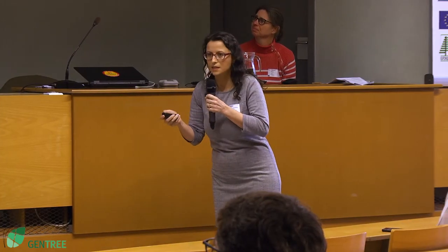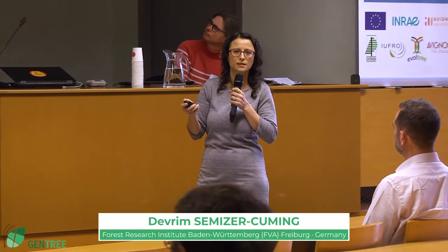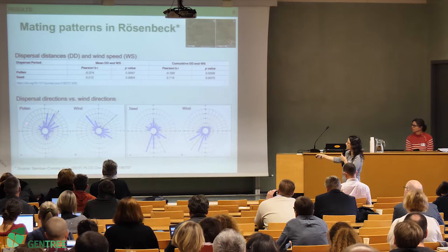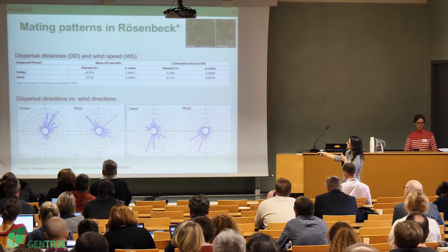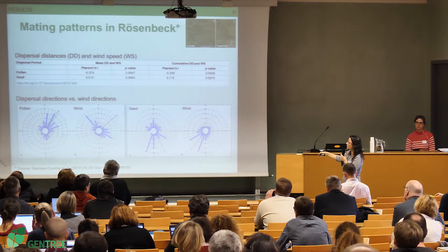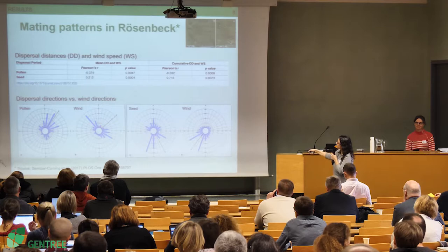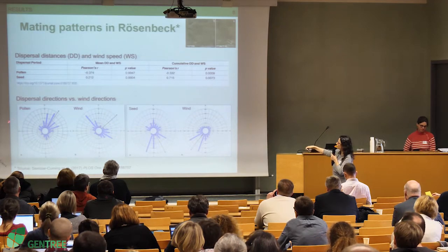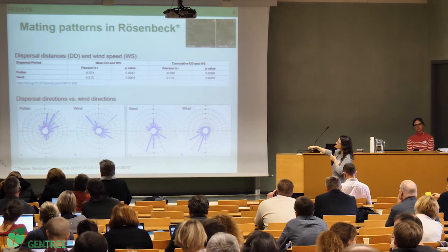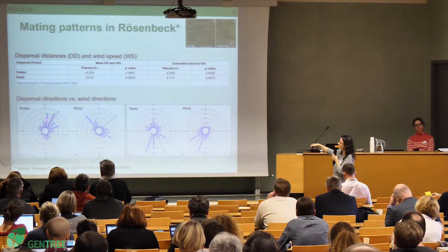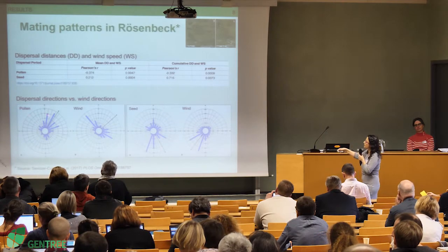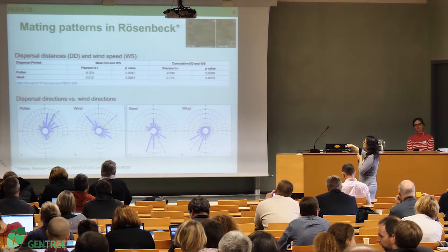When we look at the wind data, there is an effect of wind direction and wind speed on dispersal events. These circular histogram graphs show wind data collected from a local weather station a few kilometers from the site during the pollination season. The pollen data is in agreement with the wind data — you can see pollination occurring across many angles, but the mean angles coincide with the wind direction. This is not exactly the same for seed dispersal.